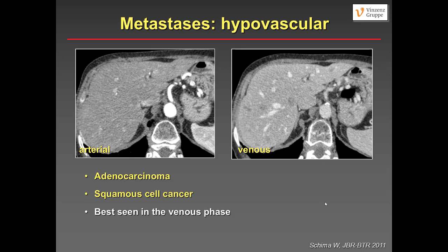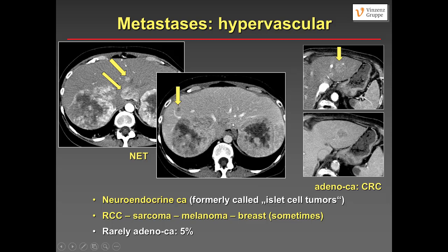Metastases can be hypo- or hypervascular. Most metastases we see are hypovascular, especially from adenocarcinoma and squamous cell cancer. In the arterial phase you don't see much — just slight inhomogeneity — but in the venous phase you see several bilobar metastases. For hypervascular metastases, think of neuroendocrine tumors, the formerly called islet cell tumors, renal cell cancer, sarcomas, melanoma, and sometimes breast cancer.